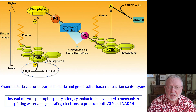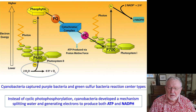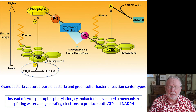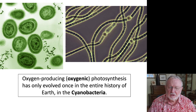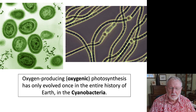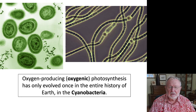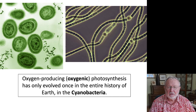So instead of cyclic photophosphorylation, cyanobacteria developed a mechanism to split water and generate electrons to produce ATP and NADPH, avoiding the need for a cyclic process. This oxygen-producing photosynthesis has evolved only once in the entire history of the Earth, and that was in cyanobacteria some 3 billion years ago.